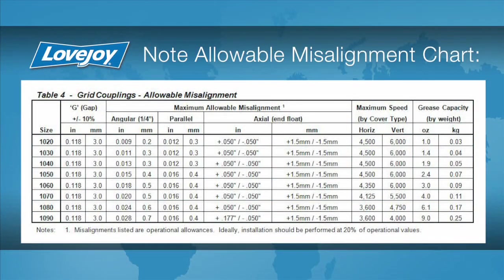The difference between any two of these measurements should fall within the range specified in the installation guide under the heading angular. If the deviation exceeds the angular value specified, you will need to realign the equipment to correct this condition.